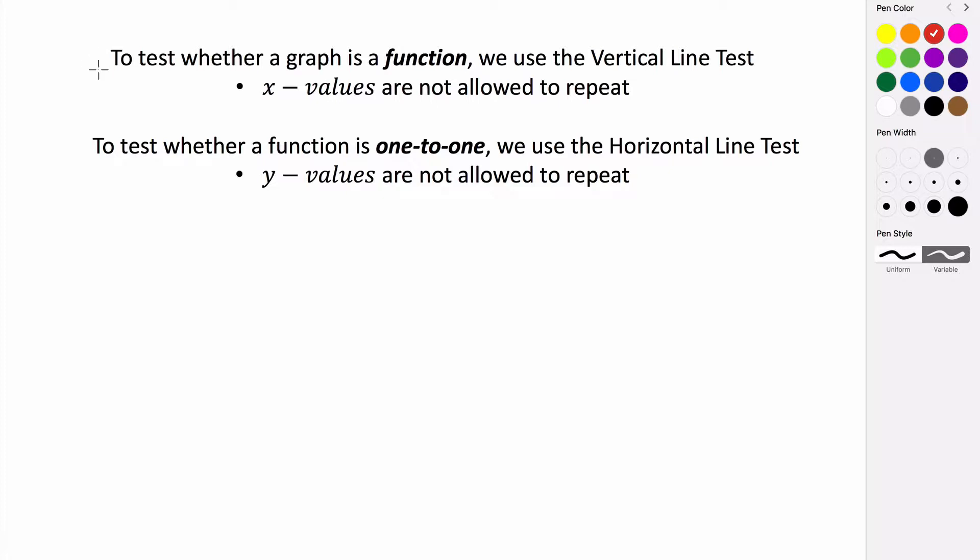So we've seen this before. To test whether something is a function, we use something called the vertical line test. And we know that something is a function if its x values, if its input values are not repeated.